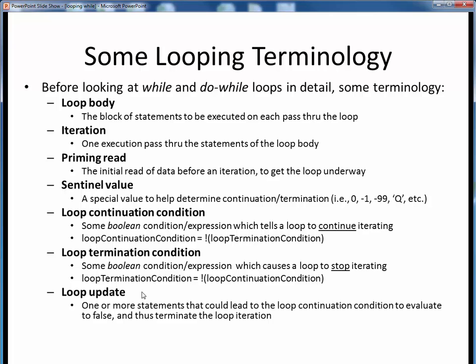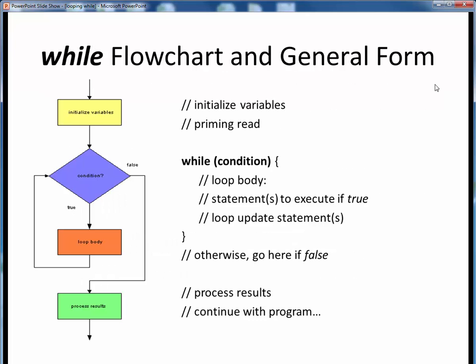Here again is the flowchart for the while loop and the corresponding code structure for it. Prior to a while loop, we have the usual initialization of any variables, but part of that should now include any needed priming read — the initialization of any data needed to get the loop underway for the first pass.